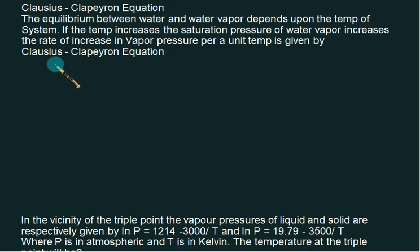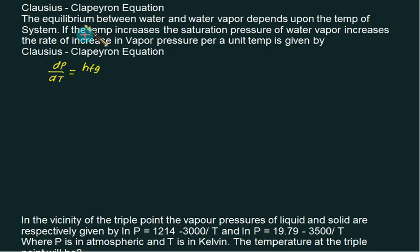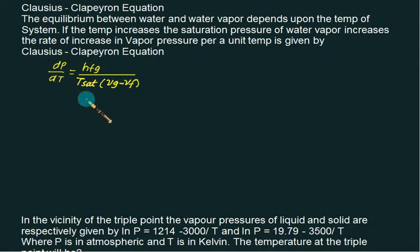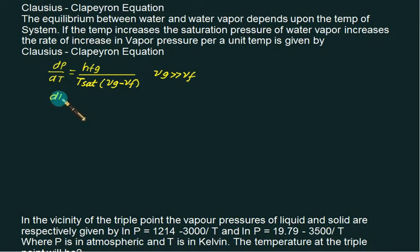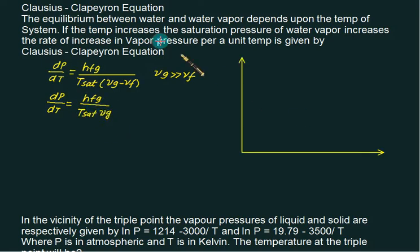We will introduce the classic Clausius-Clapeyron equation, which is normally used to find out the latent heat of vaporization. This equation is given as dp/dt equals hfg (latent heat of vaporization) divided by T_sat into (vg minus vf). If you know dp/dt, you can calculate hfg. Practically, vg is very much greater than vf, so we can neglect vf, giving dp/dt equals hfg divided by (T_sat into vg).